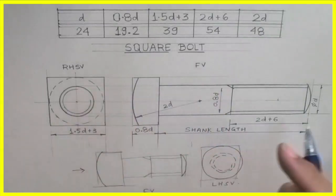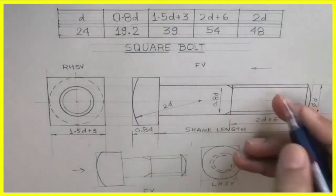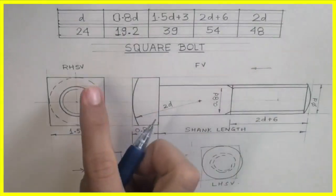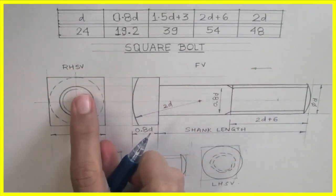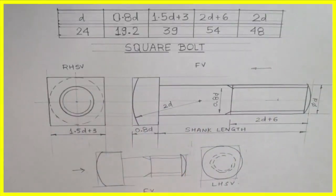I hope all of you got this difference. Again, right-hand side view: you see from this side, that's why chamfering dotted, threading dark. Left-hand side view: I'll see from here, that's why chamfering dark and threading dotted.